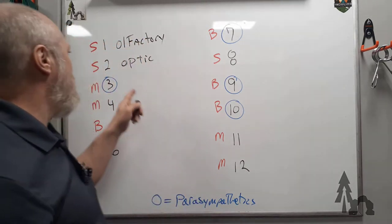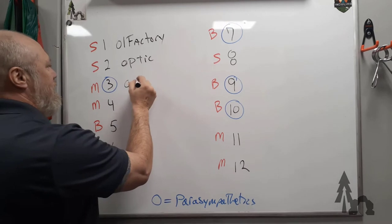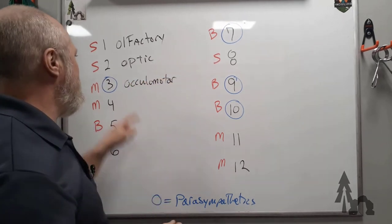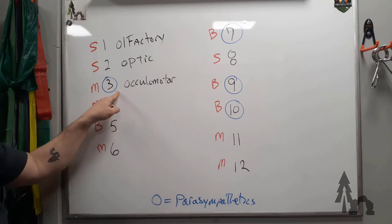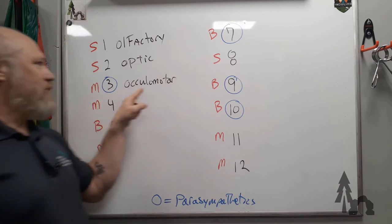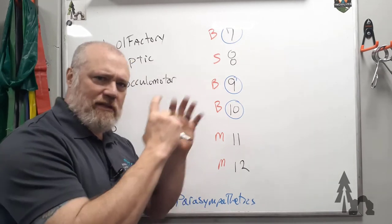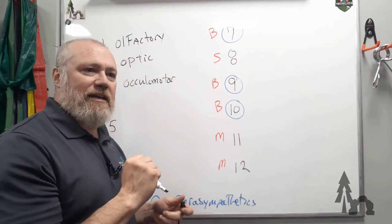Number three is the oculomotor nerve. The oculomotor nerve does a few things: one, it's got parasympathetic fibers; it's also responsible for your pupillary light reflexes—that's the motor part—and the movement of four of the six extraocular muscles.